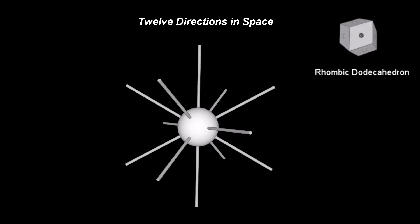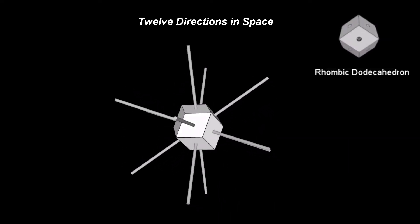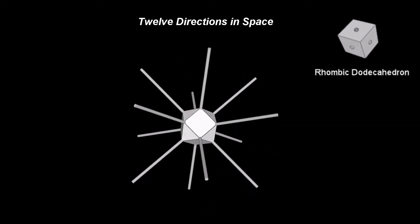There are other geometrical solids that can be used to understand the pattern of these 12 directions. The best one available in our universe is the rhombic dodecahedron.